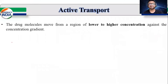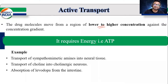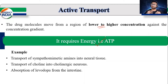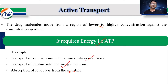यह हमने देखा था इस presentation में. Active transport मतलब drug का movement lower concentration से higher concentration तक हो सकता है - against the concentration gradient. वहाँ पे ATP की need होती है, ATP का use किया जाता है to allow that transport from lower concentration to higher concentration. तो यह process आपको कहाँ पे दिखेगी: Sympathomimetic amines in neural tissue, Choline and cholinergic neurons, transport of choline into cholinergic neurons, absorption of levodopa from the intestine. जहाँ पे lower concentration से higher concentration तक जाना है, तो आपको ATP का use करना पड़ेगा.